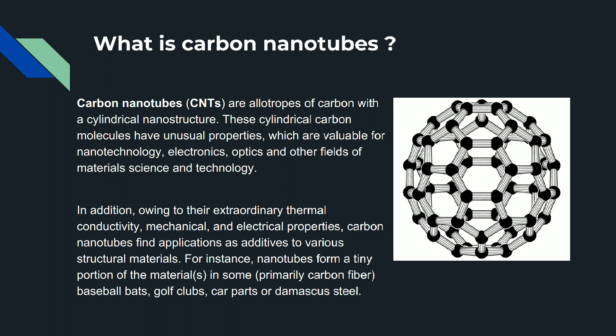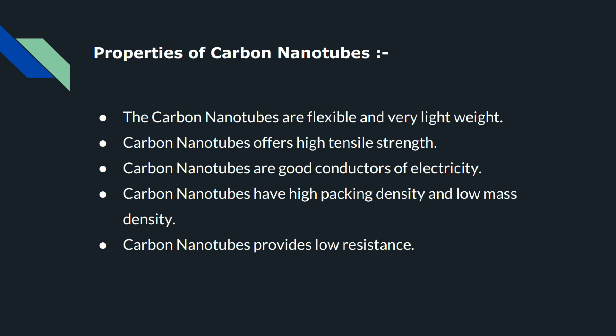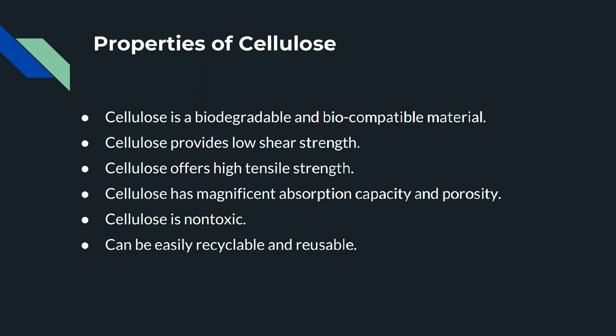Owing to their extraordinary thermal conductivity and mechanical and electrical properties, carbon nanotubes find application as additives to various structural materials. For instance, nanotubes form a tiny portion of materials in some baseball bats, golf clubs, car parts, and Damascus steel. Carbon nanotubes are flexible, very lightweight, offer high tensile strength, are good conductors of electricity, and have high packing density and low mass density, providing low resistance.